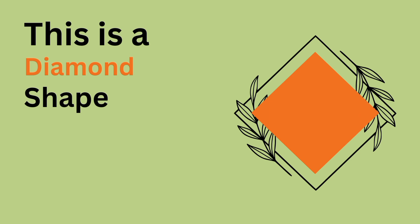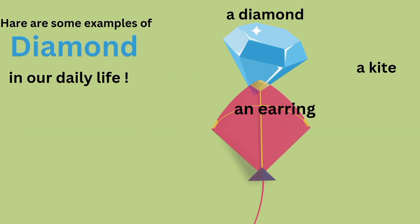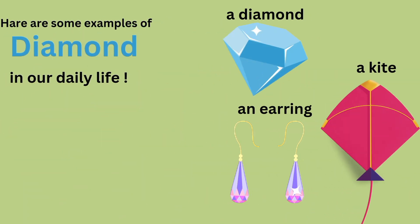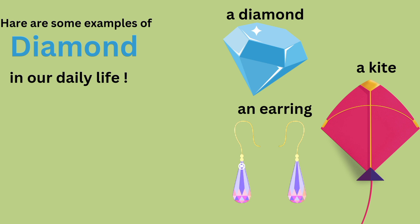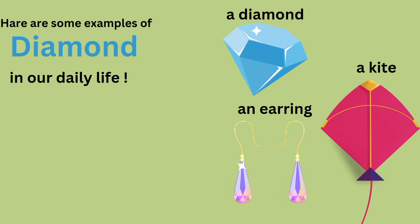This is a diamond shape. Here are some examples of diamonds in our daily life: a diamond, an earring, a kite. These are diamond shapes.